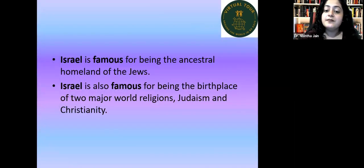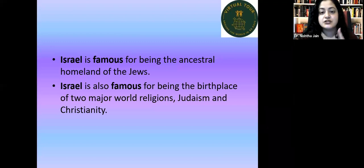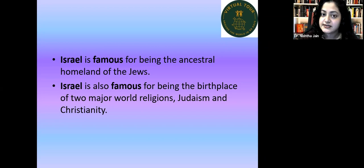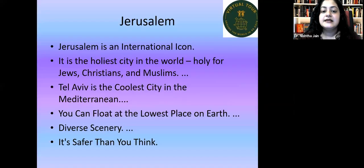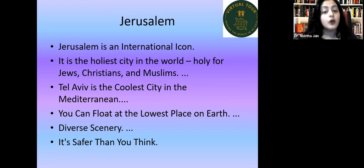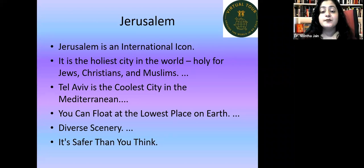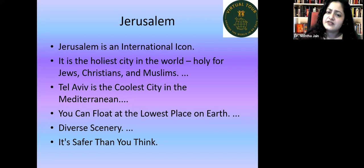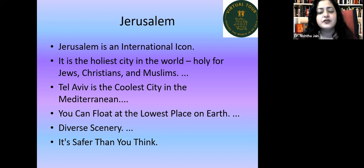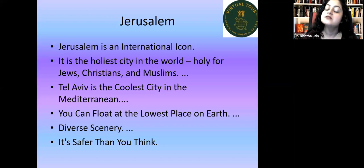Israel is famous for being the ancestral homeland of the Jews and the birthplace of two major religions: Judaism and Christianity. Jerusalem, the capital, is an international icon — the holiest city in the world, especially sacred for Jews, Christians, and Muslims. Tel Aviv is the coolest city in the Mediterranean region. You can also float at the lowest place on Earth here. Jerusalem has a diverse and beautiful scenery and is much safer than many think.